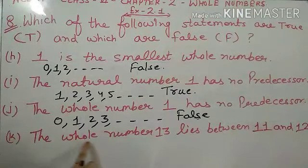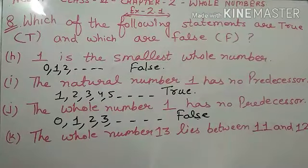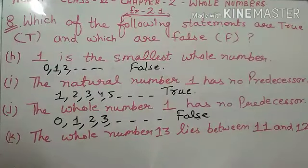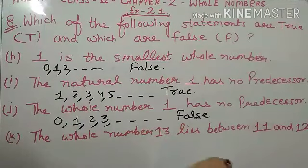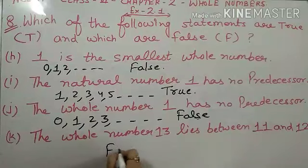Now k part: 'The whole number 13 lies between 11 and 12.' Whole number 13 jo hai woh 11 aur 12 ke beech mein aata hai. Agar hum dekhe hai, 11 ke baad 12, 12 ke baad 13 aata hai. 11 aur 12 ke beech mein 13 nahi aata, 12 ke baad 13 aata hai. Aur yahan pe diya hai ki 13 lies between 11 and 12. So that means this statement is also false.